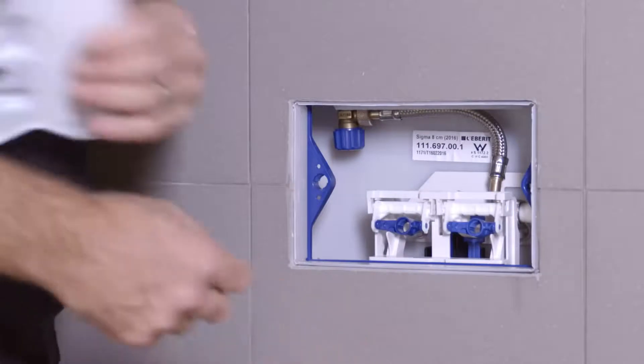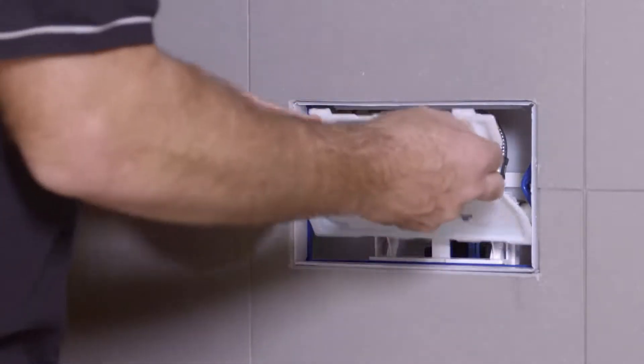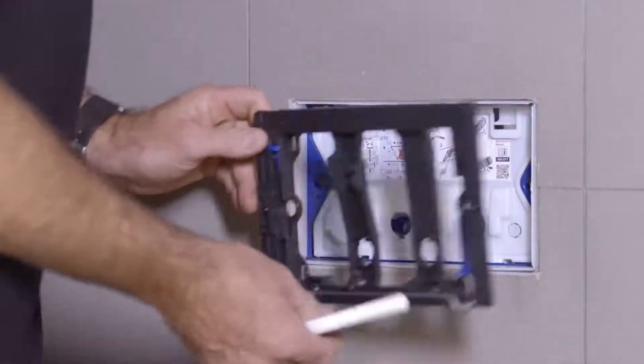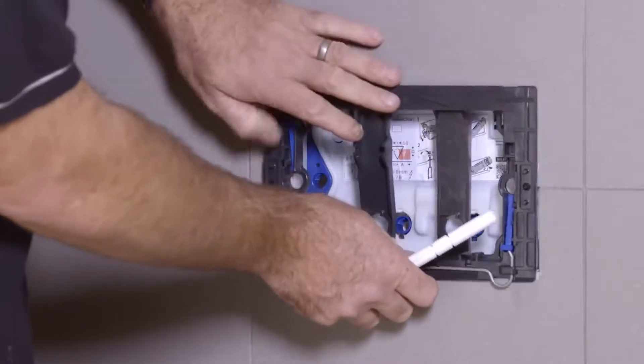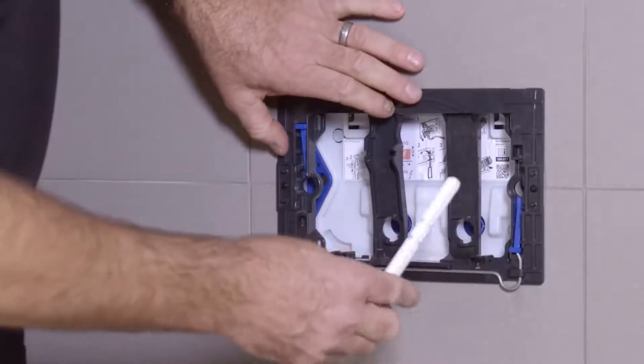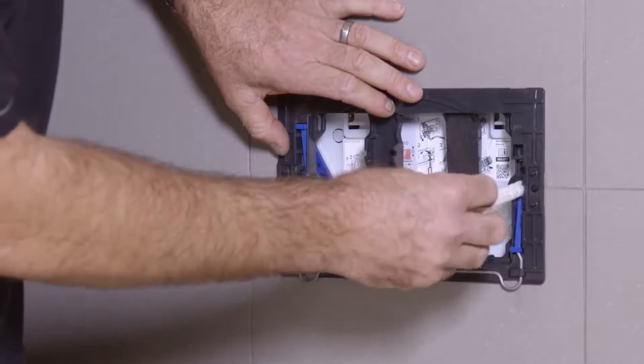Fit the transmission block, then fit the inner cover. Fit the mounting frame to the front of the installation duct and adjust the fastening bolts to suit the depth of the wall cavity.